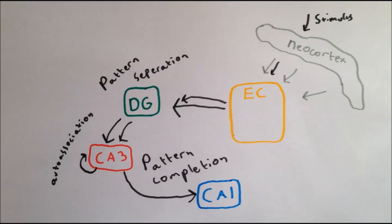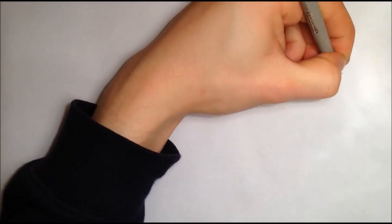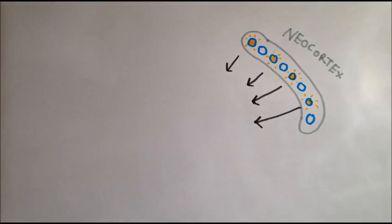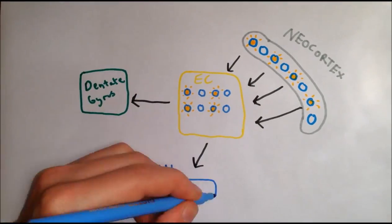The final step is to see how the hippocampus reactivates the appropriate areas of the cortex. This is thought to be mediated by CA1. The entorhinal cortex not only projects to the dentate gyrus, but also to CA1.